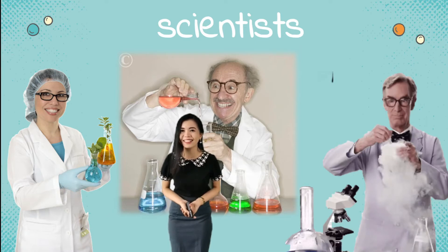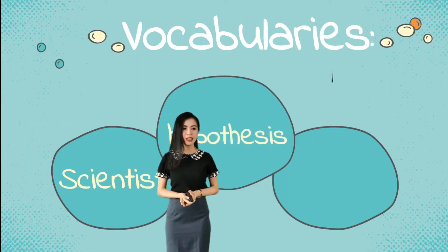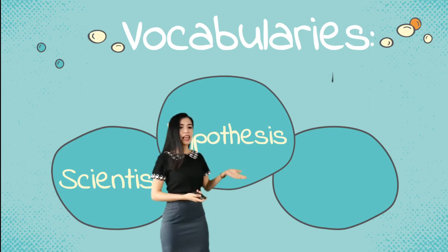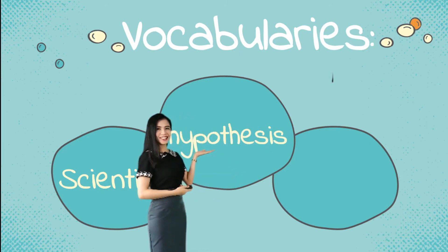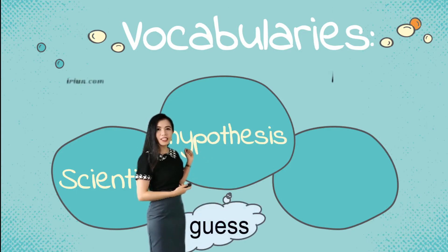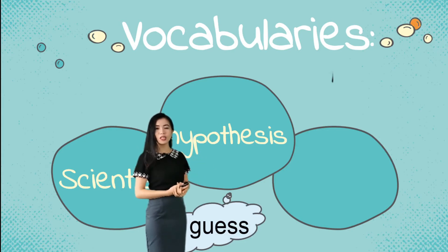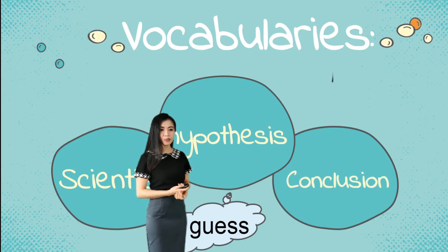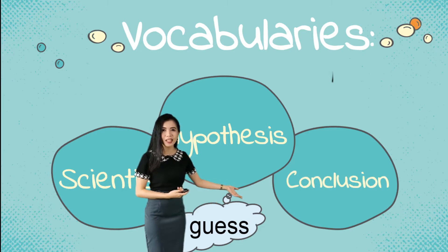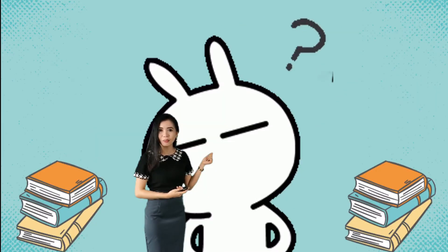Do you want to be a scientist? The second word is hypothesis. Hypothesis is an educated guess — these are the answers we make to our questions based on information that we already know. And the last word is conclusion. Conclusion is the end of the process.